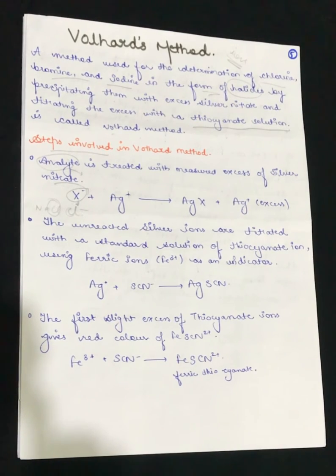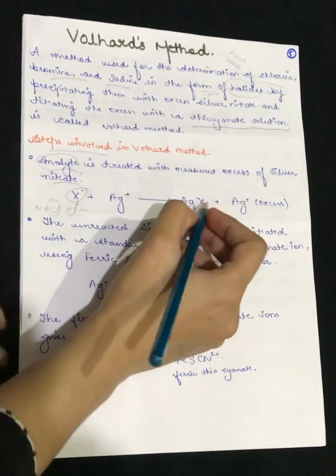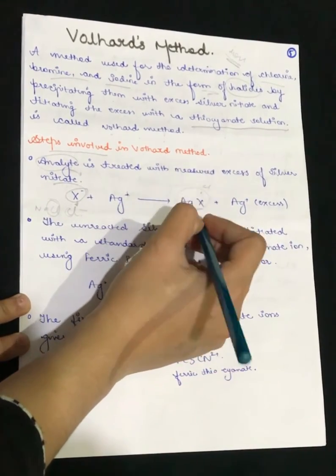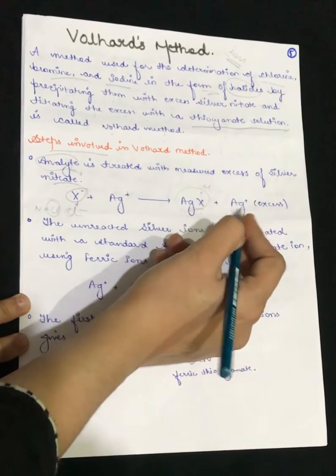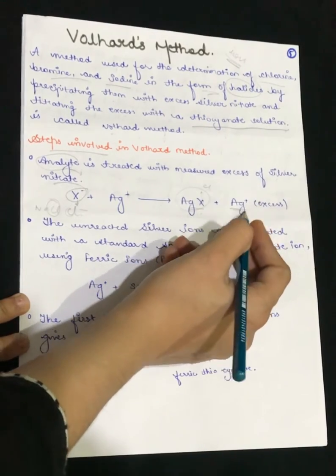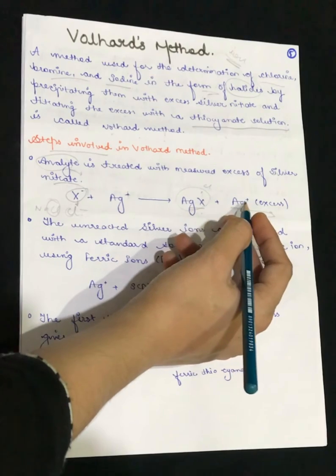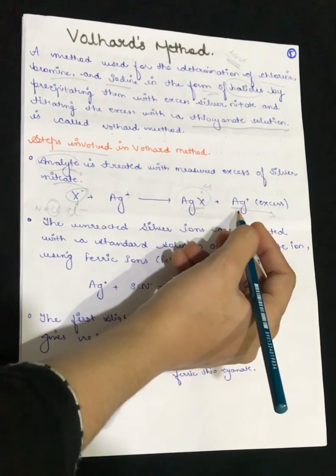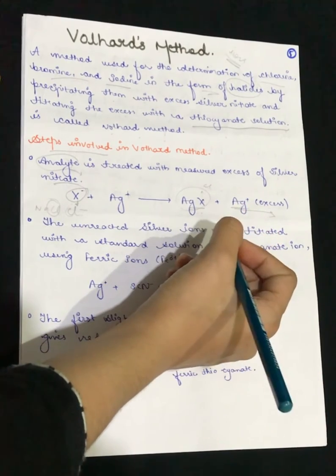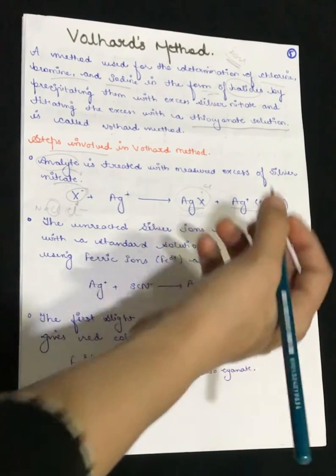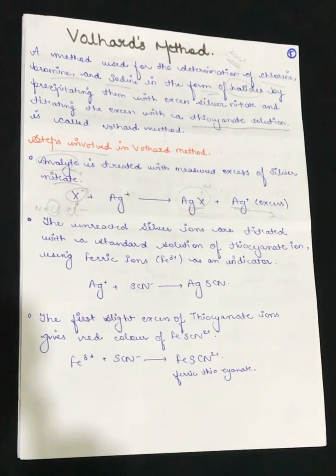When we have sodium chloride reacting with silver nitrate, we get silver chloride as a white precipitate, plus the excess silver nitrate that remains in solution. Suppose we have NaCl — so here we get AgCl (white precipitate) and the remaining excess silver nitrate.